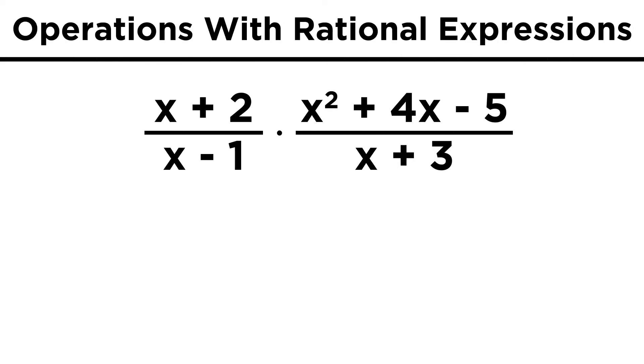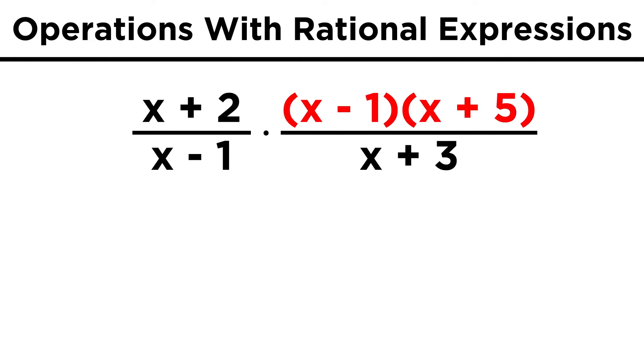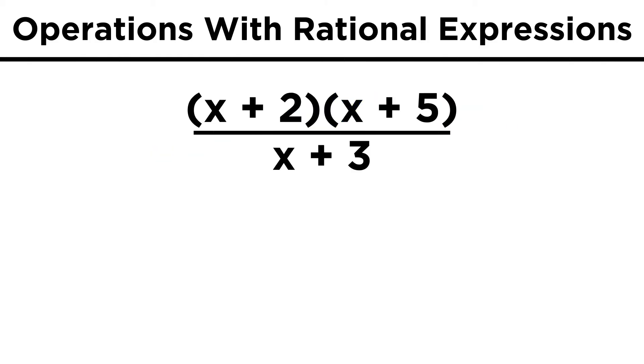Let's say we want to multiply x plus two over x minus one times x squared plus four x minus five divided by x plus three. If we factor this trinomial, we get x minus one times x plus five, allowing us to cancel out some terms, and we get this as the product.